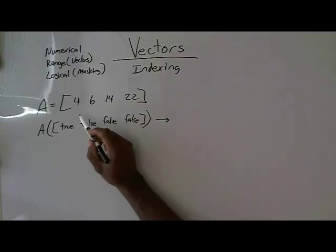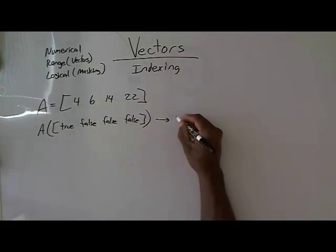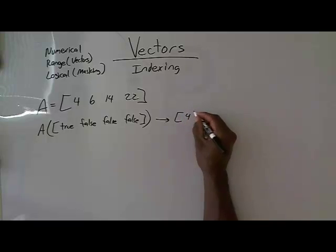Well, it's just going to, where there is a true, it's going to keep those values, and where there's a false, it's not going to keep them. So that's just simply going to give me back the vector 4.